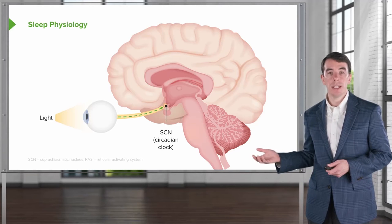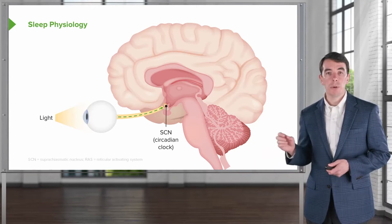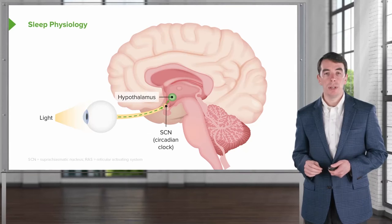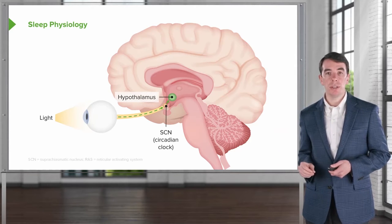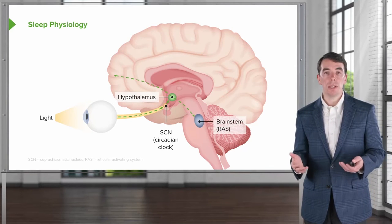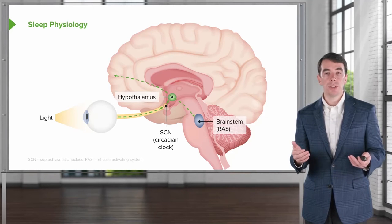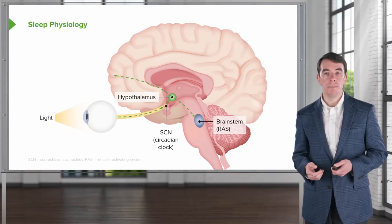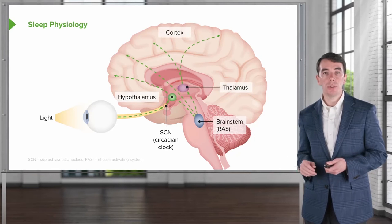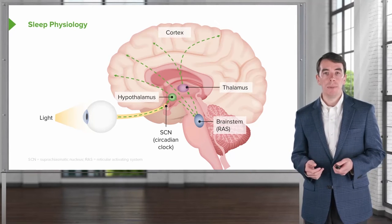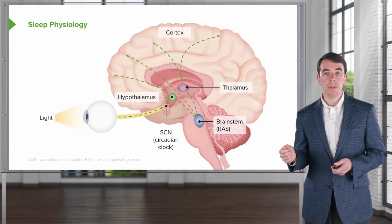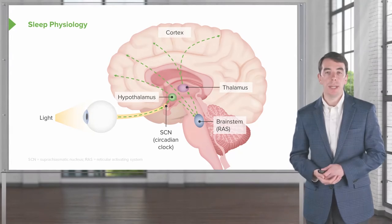You can see here the suprachiasmatic nucleus, or SCN, projects neurons to the hypothalamus. From the hypothalamus, signals are sent to the brainstem and the reticular activating system. The reticular activating system, or RAS, is what turns the rest of the brain on. And you can see here projections throughout the cortex to turn the brain on. And so this is a critical regulator of how we turn the brain on and wake up during the day.